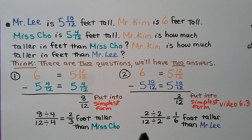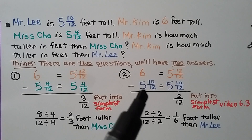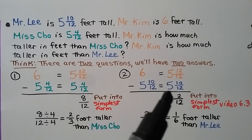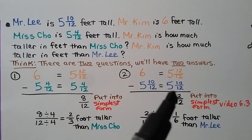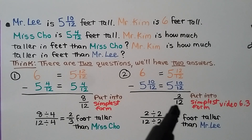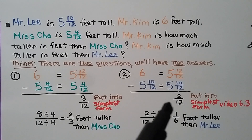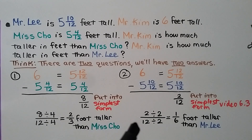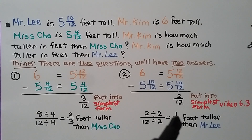Now we need to do the second part: compare Mr. Kim to Mr. Lee. Again, we change this 6 into a 5 and 12 twelfths to subtract 5 and 10 twelfths. 12 minus 10 for the numerators is 2, over our like denominator 12, giving us 2 twelfths. We put this in simplest form by dividing both 2 and 12 by the greatest common factor, which is 2. 2 divided by 2 is 1, and 12 divided by 2 is 6. We know Mr. Kim is 1 sixth of a foot taller than Mr. Lee.